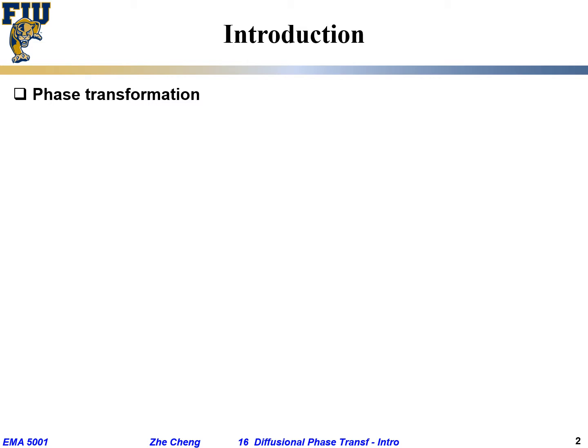Before we go into detail on solid-state transformation, let's first talk about phase transformation in general. There are different types depending on the phases involved. For example, there are solid-gas phase transformations — transformations that happen between a solid phase and a gas phase — such as sublimation, the change of solid directly into the gas phase without going through the liquid phase, or the oxidation of many metals where oxygen in the air attacks a pristine metal and forms an oxide.